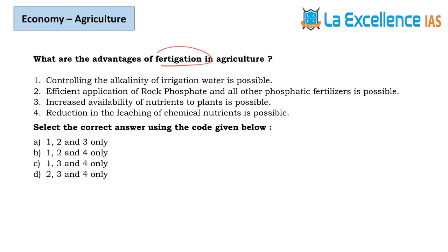The first question is with respect to fertigation in agriculture — they are asking about its advantages. Whenever multiple-statement questions come, try to solve with the elimination procedure. Fertigation is nothing but injection of fertilizers directly into the irrigation system, so directly adding water-soluble fertilizers into the irrigation system is called fertigation.